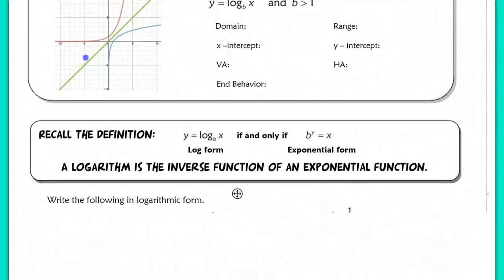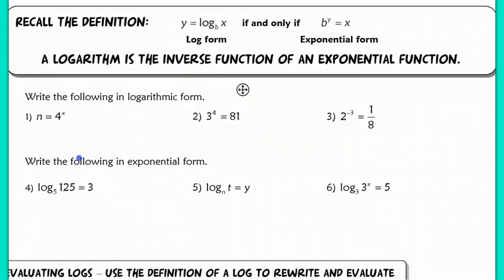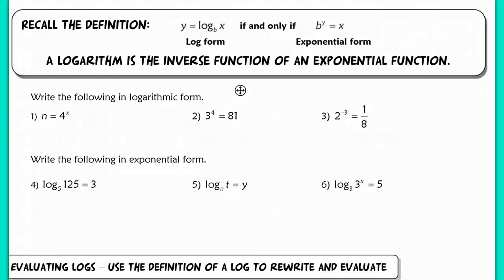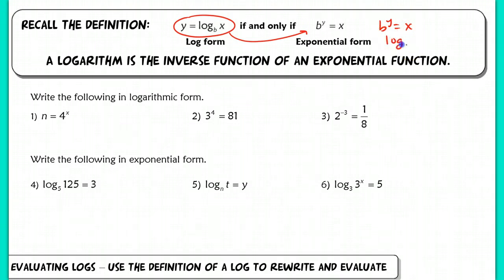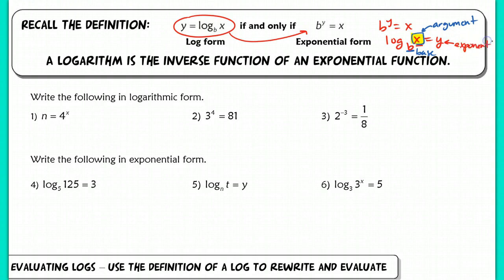Now let's talk about the algebraic definition of our log. Log form can be turned into exponential form: b to the y equals x is the same as saying log with a base of b of x equals y. The argument is x — we call that number the argument. b is the base, and y is the exponent. You can go back and forth between these two forms. Starting with the exponential y equals b to the x, its inverse is f-inverse of x, which is log base b of x.